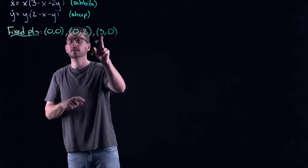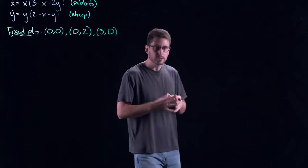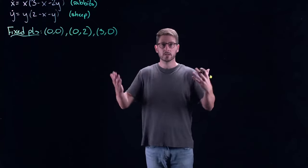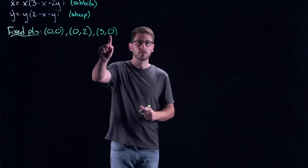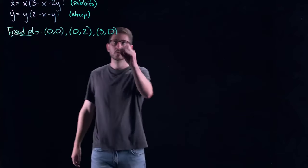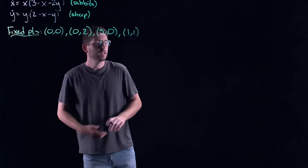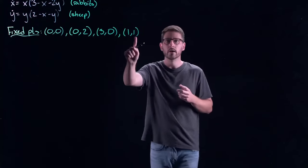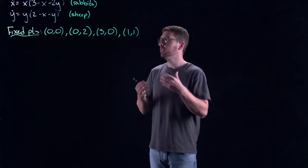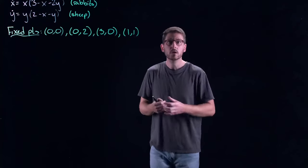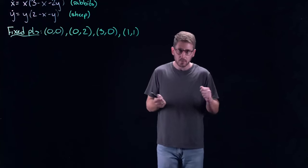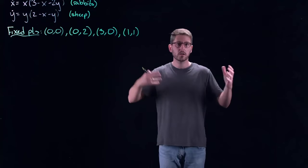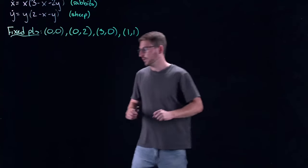Similarly, there is a fixed point at (3, 0) — the rabbits have reproduced until they've covered the entire field in a logistic growth model with no sheep. And finally, there is a coexistence state at (1, 1), where the relative populations of rabbits and sheep are equal. They are existing in harmony — there's enough for both populations to sustain each other without crowding each other out.